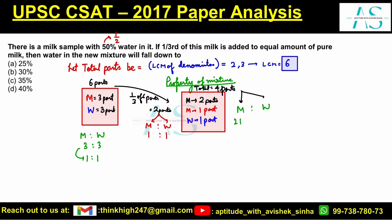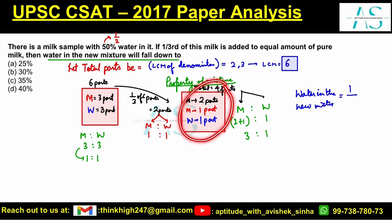In the new mixture: milk is 2 plus 1 which is 3 parts, and water is 1 part. So it is 3 to 1. Water content is 1 part out of total 4 parts, which is 25%. Option A is the correct answer.